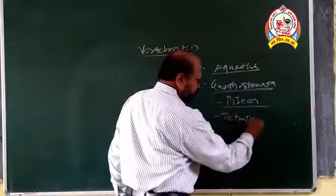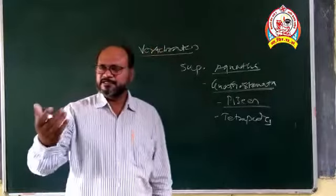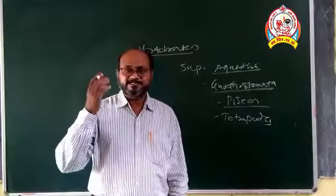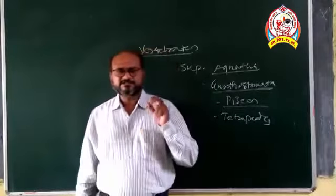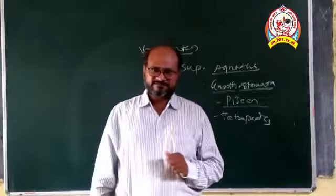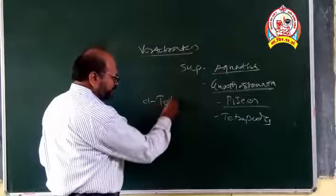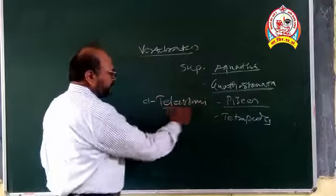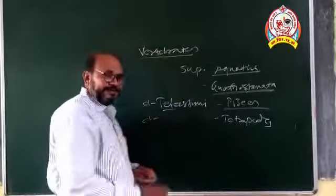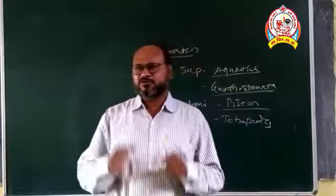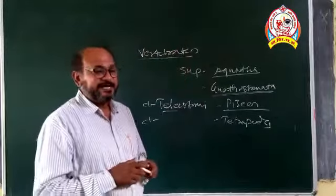Another superclass is Tetrapoda, which includes the higher vertebrate groups such as amphibians, reptiles, birds, and mammals. In Pisces, according to scientists, there are seven classes, but presently we study the most important two classes. First class is Osteichthyes, also known as bony fish. The second is Chondrichthyes, also known as cartilaginous fishes, meaning the endoskeleton is made of cartilage.